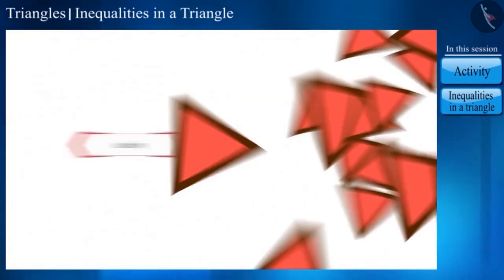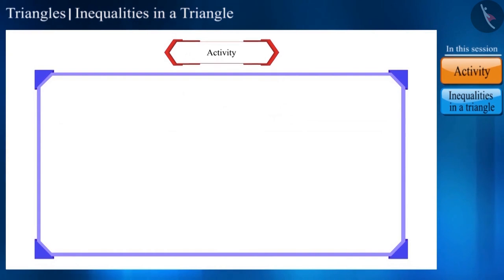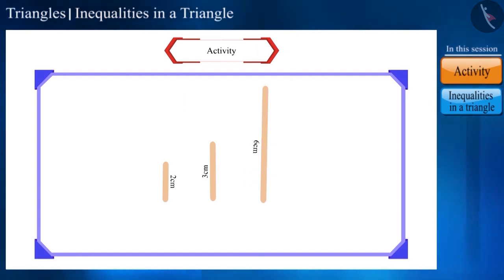Friends, let's start with an activity. We will construct a triangle by taking thin pieces of wood of 2 cm, 3 cm and 6 cm, where the base is the 6 cm piece of wood and the remaining two sides are 2 and 3 cm respectively. Can such a triangle be formed? You can see that this is not possible.